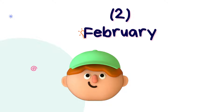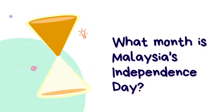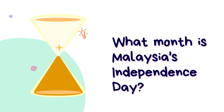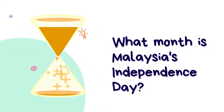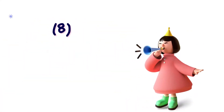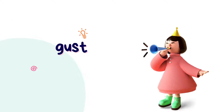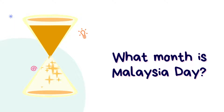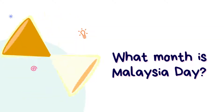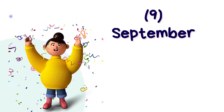Next question. What month is Malaysia's Independence Day? Can you tell in what month is Malaysia's Independence Day? It's August. Good job if you get the answer correct. What month is Malaysia's Independence Day? It's September. Well done if you get the answer correct for all the questions.